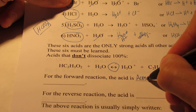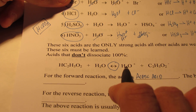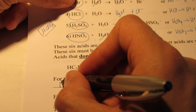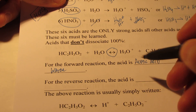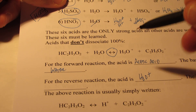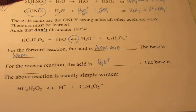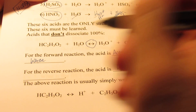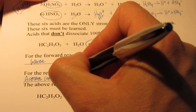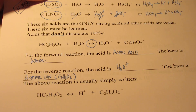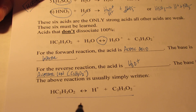For the forward reaction, the acid is acetic acid, and the base would be water because water is gaining a proton during the process. For the backward reaction, the H₃O⁺, the hydronium ion, loses the proton, and the base is the acetate ion, which will gain the proton — that's the C₂H₃O₂⁻ ion. We often get rid of water from both sides, so we normally write it in the abbreviated form.